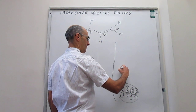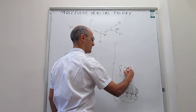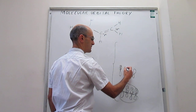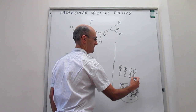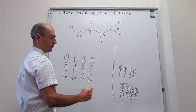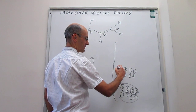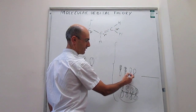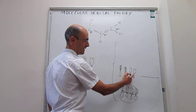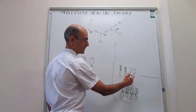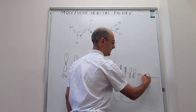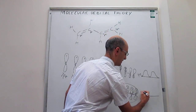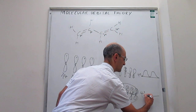The second molecular orbital has orbitals one, two, three, four with signs arranged so that the wave function changes sign between the second and third atom, creating one node. Looking at the probability distribution psi-squared, that node is visible in the middle of the molecule.